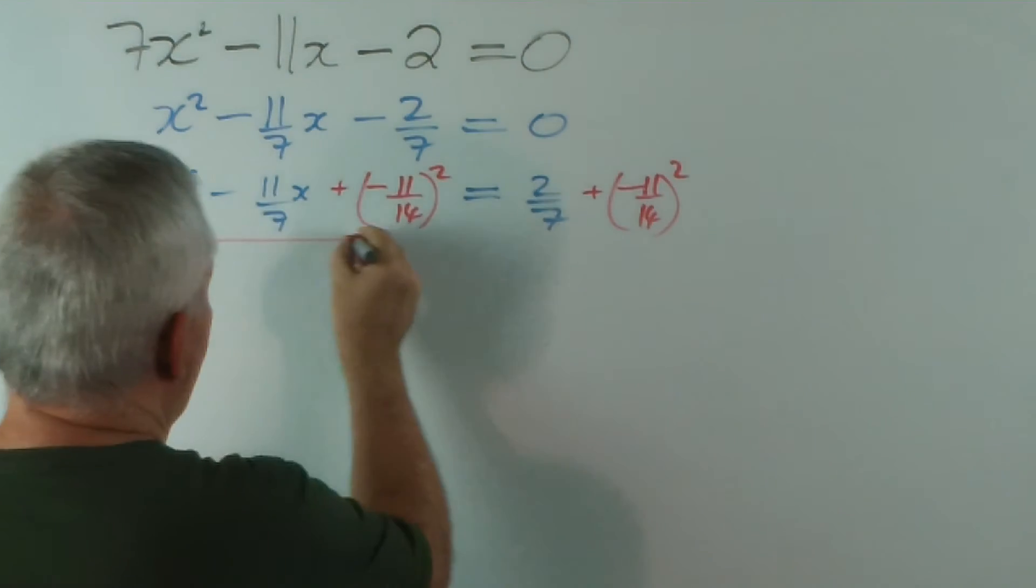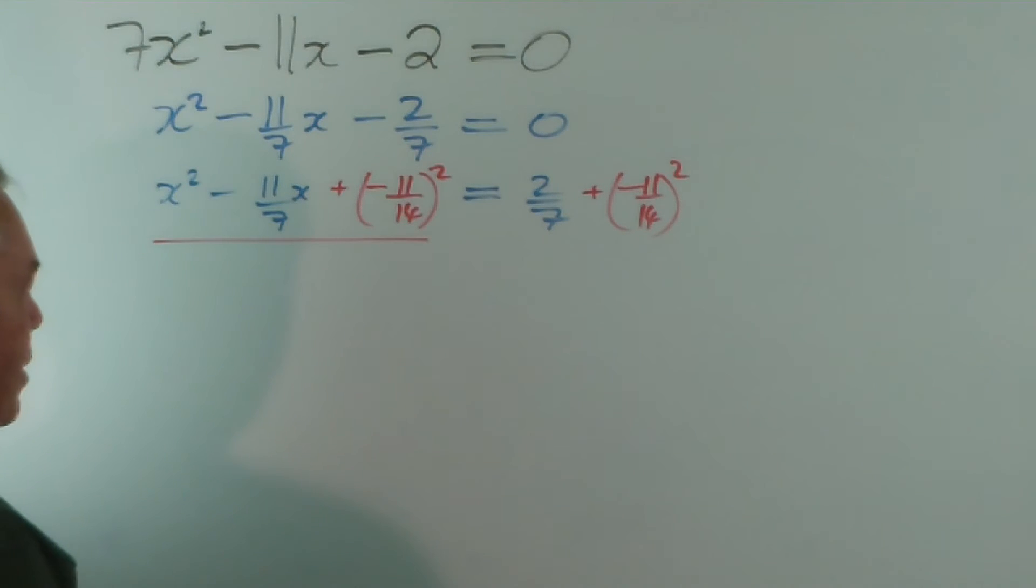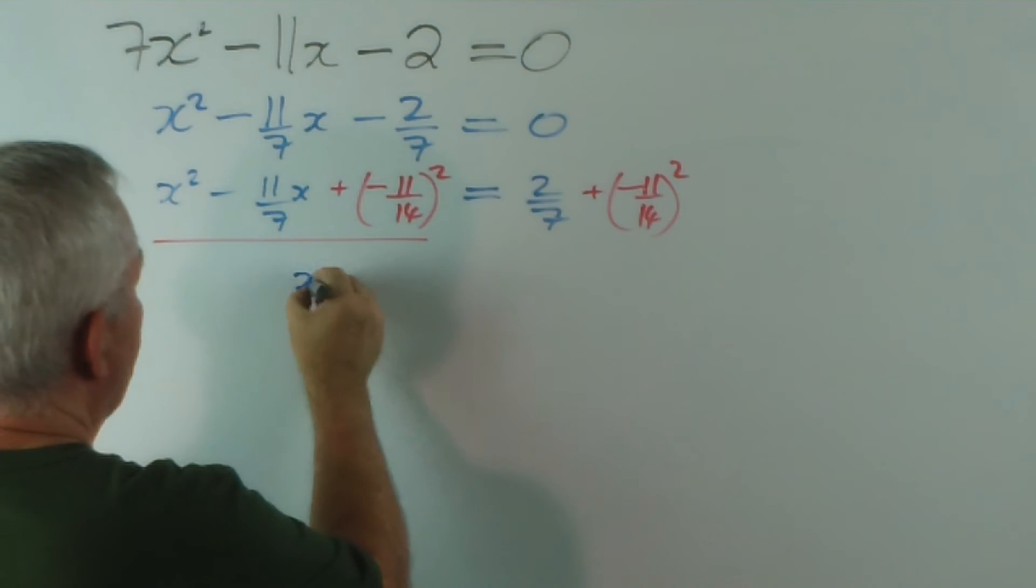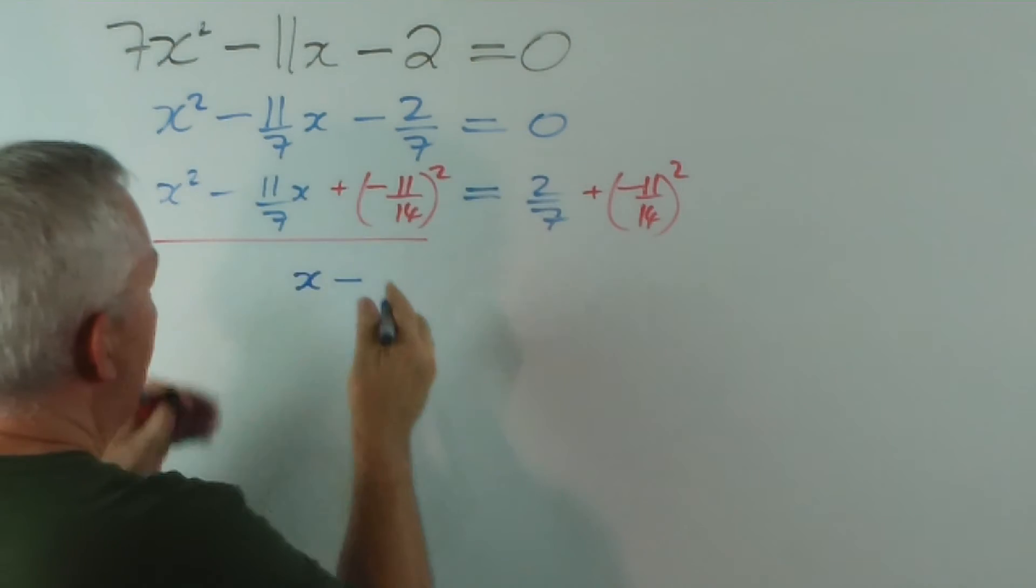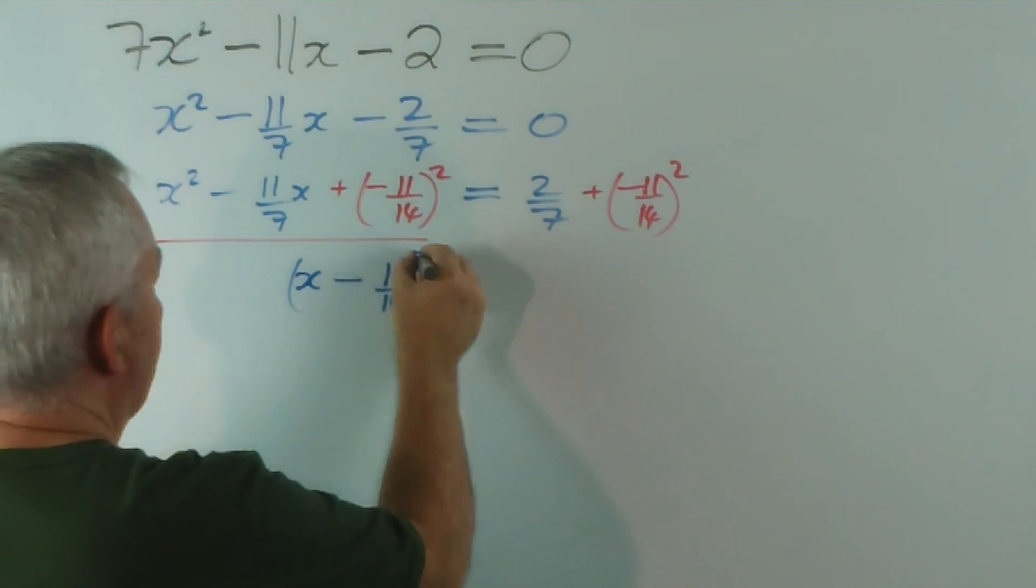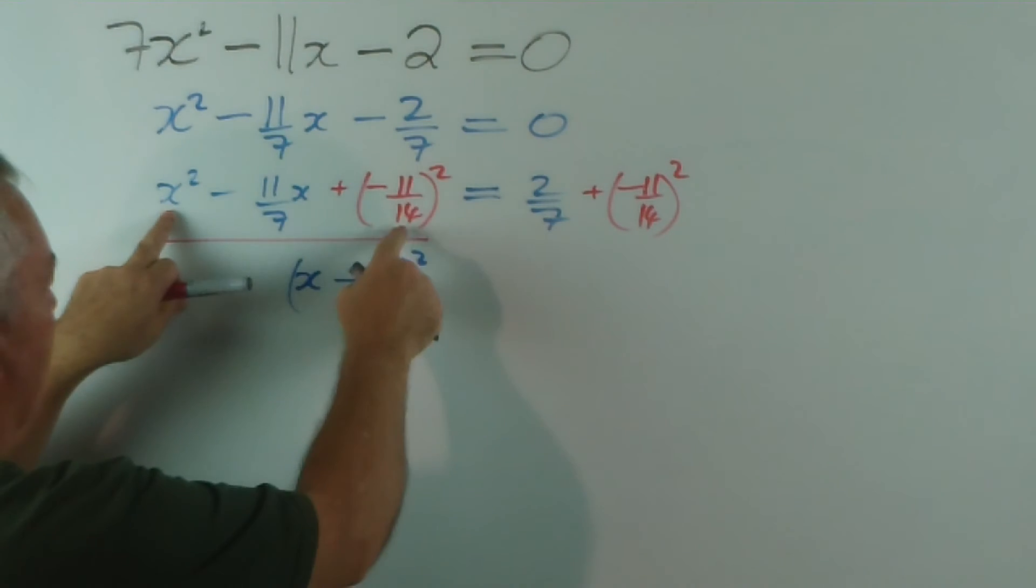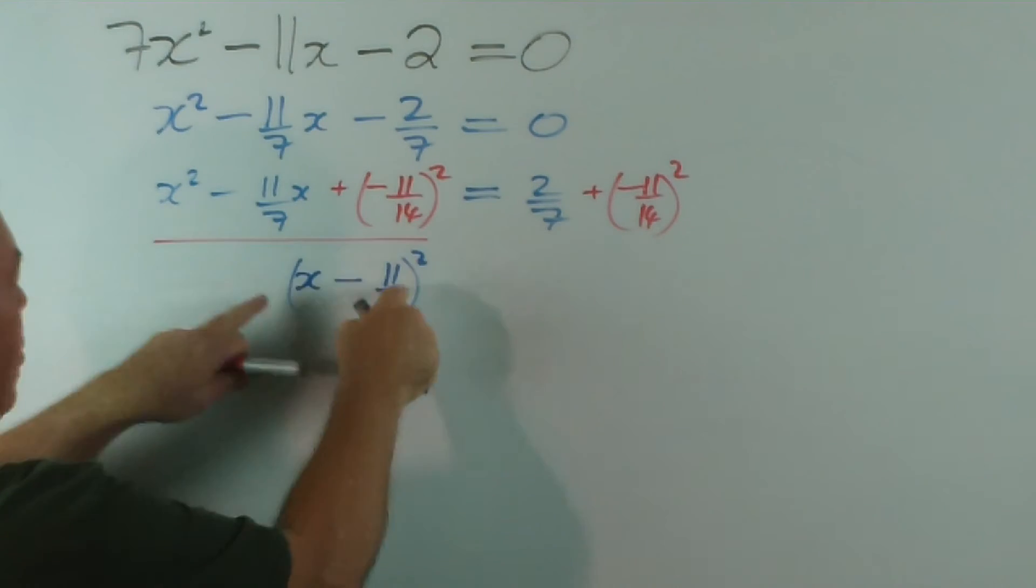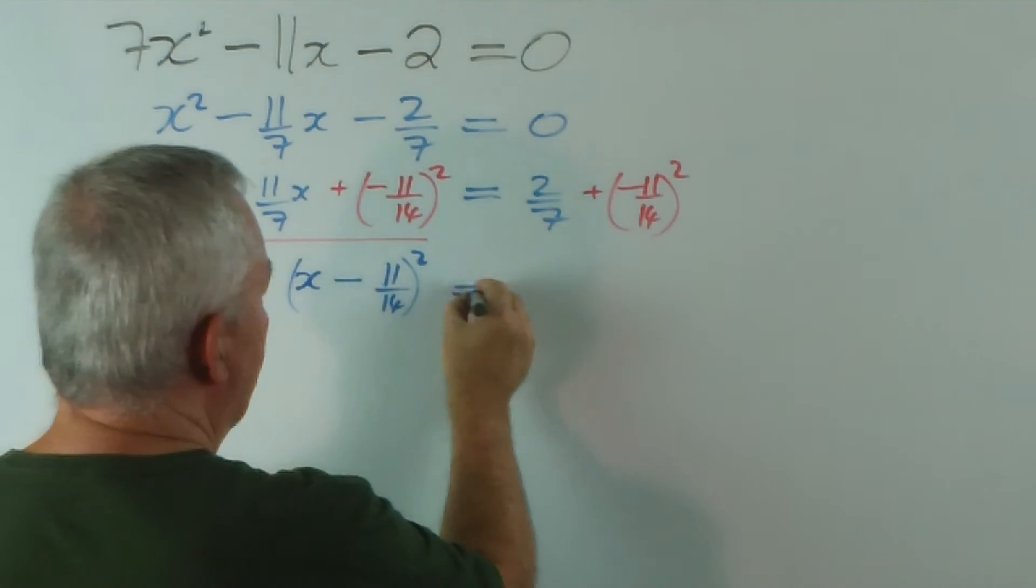Now, the perfect square is there. We have completed the square, so what's it worth? Its worth, or its expression can be contracted, is x minus 11 on 14, all squared. There it is, x minus 11 on 14, all squared, equals...